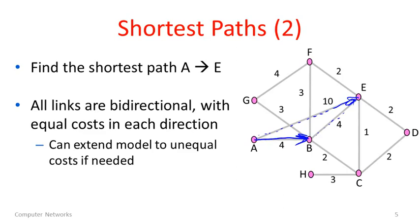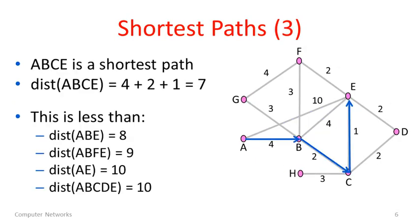It's this path, A to B, B to C, and C to E. That has cost 4 plus 2 plus 1 is 7. And that's the shortest path on this graph. I've cleaned up this diagram a little bit and retraced it over and you can see it there.